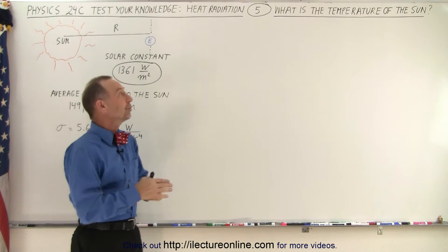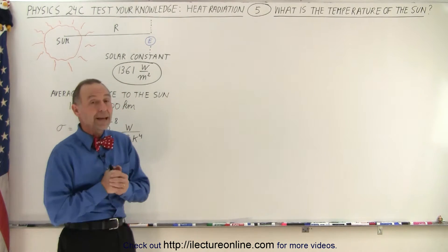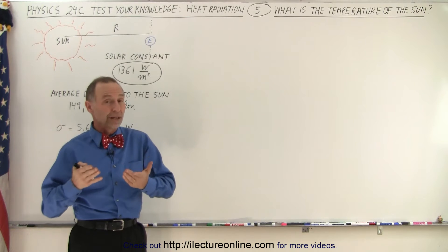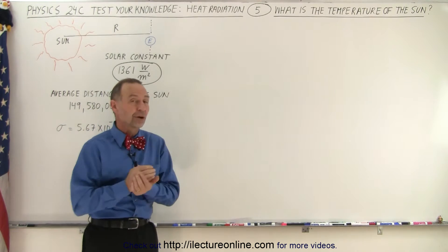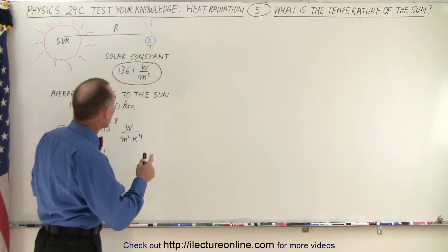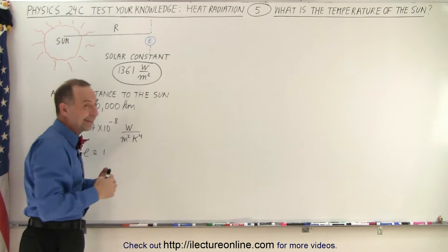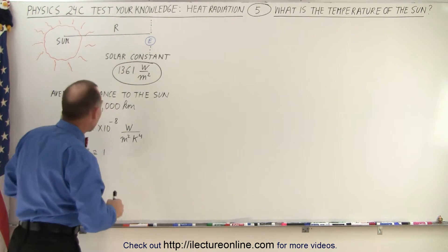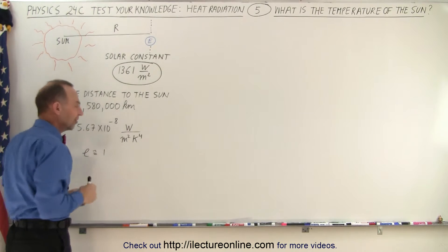What we're going to do today is work on some thermodynamics, and we're going to start with trying to determine the temperature of the sun based upon knowing what the solar constant is at an average distance between the earth and the sun, and what the average distance is.